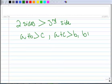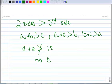And B plus C has to be greater than A. So in the last example, we had 4 plus 10 we thought would be greater than 15. It's not greater than 15, so we had no triangle.